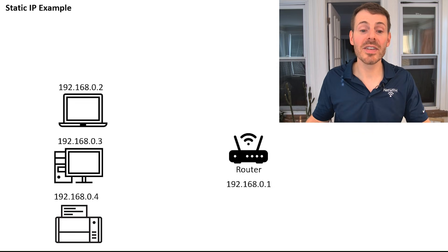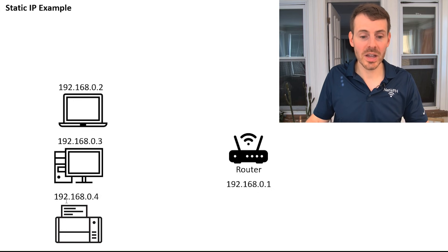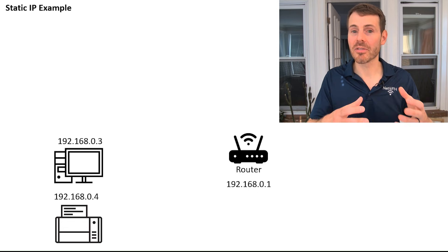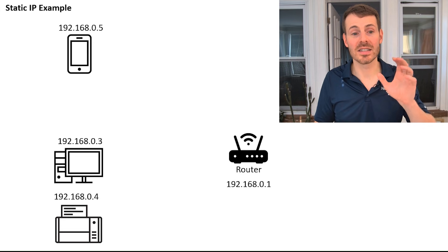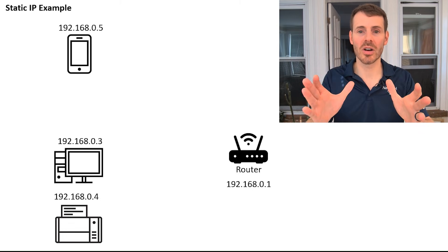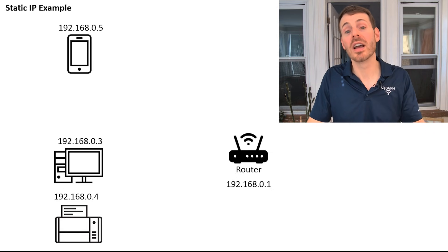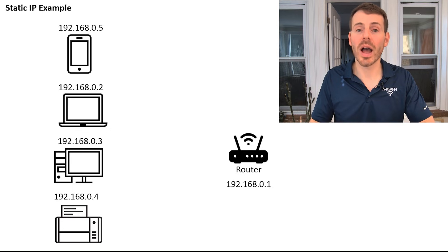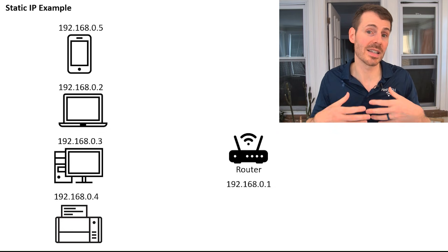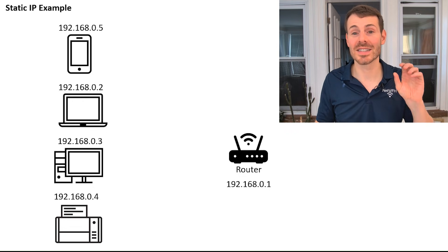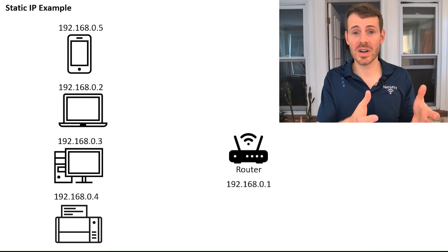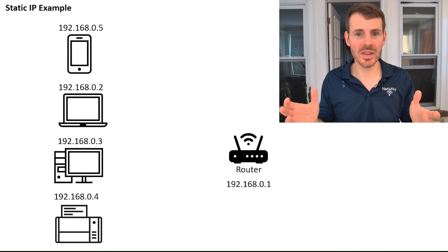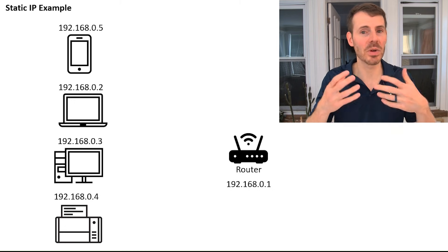Let's walk through a home network example using static IP addresses. We have the same devices: laptop at .2, desktop at .3, printer at .4. We take our laptop to work, your friend comes with their mobile phone, and right off the bat, the .5 IP address gets assigned to the mobile device because the .2 IP address is reserved for your laptop. When your laptop comes back after work and reconnects to the home network, that .2 IP address is still assigned to it — it doesn't change because it's statically assigned.